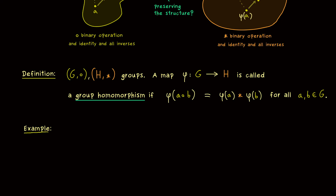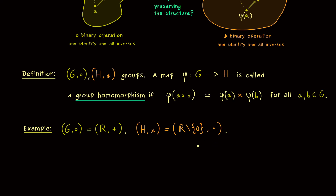But before we do that, I first want to show you a very nice example of a group homomorphism. The group G should be given by the real numbers together with the addition, and the group H should be given by the real numbers together with the multiplication. However, in this case, if you want to have a group we have to exclude 0. Then we have two well defined groups, meaning we have an identity element and all the inverses — here the number 1 is the identity element and there the number 0. Now let's define a very nice map phi from G into H, given by sending x to the exponential of x, i.e., Euler's number to the power x. This is a well defined map because we will never hit 0 with the exponential function.